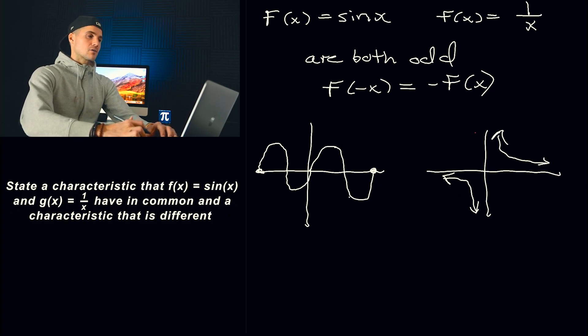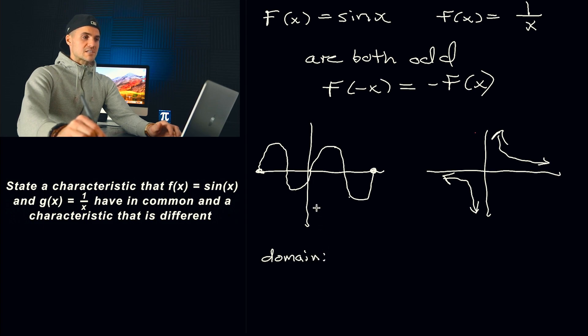And then a characteristic that is different for both, well, I mean, there's so many. We could list some. First off, the domain is different. The domain for sine x, sine x, this keeps going on forever, even though I stopped it at negative 360, positive 360, this keeps going on forever as a wave. So the domain of sine x is basically x∈ℝ. And then what's the range for sine x?